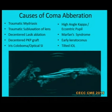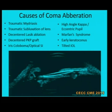Clinical causes of coma include traumatic mydriasis, traumatic subluxation of lens, decentered LASIK ablation, decentered PKP graft, iris coloboma, optical IOL with very high angle kappa, eccentric pupil, Marfan syndrome, early keratoconus, or a tilted IOL with one loop in the bag and the other in the sulcus.